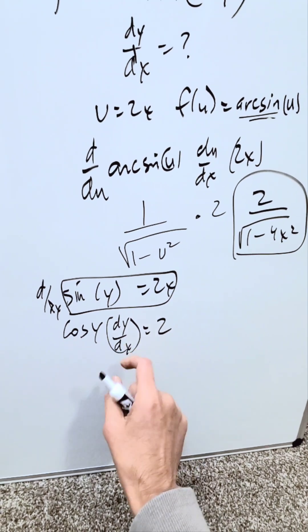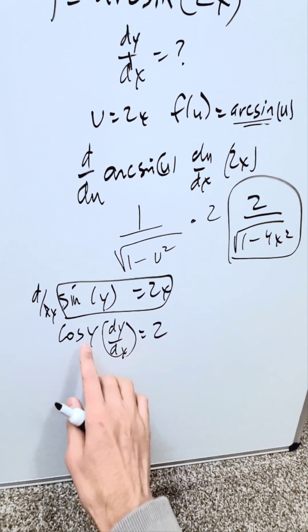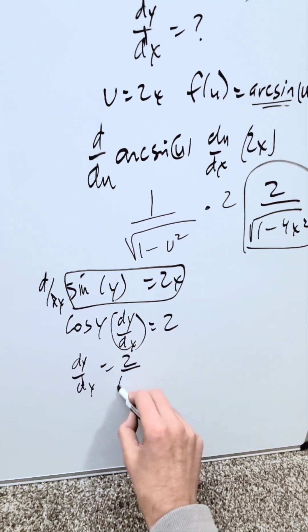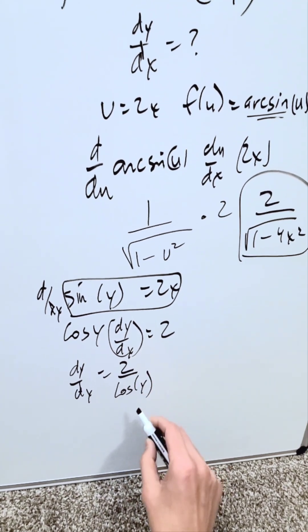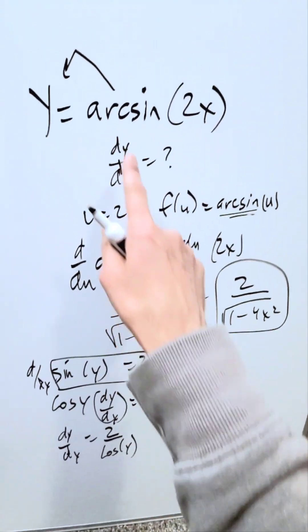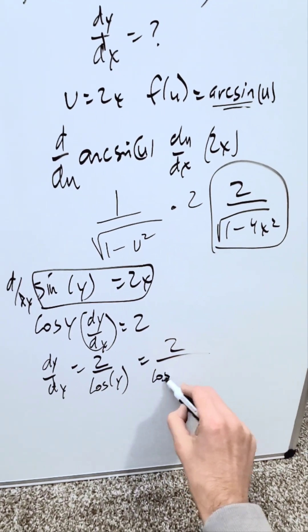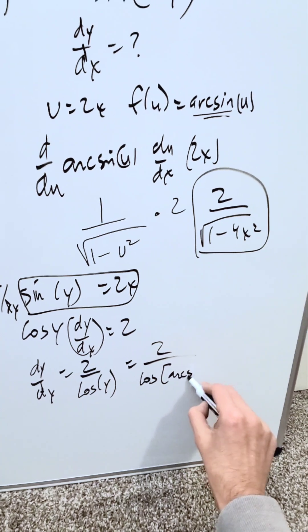Push the dy/dx. Keep the dy/dx here. Push the cosine y on the other side. dy/dx is equal to what? 2 divided by cosine of y. What was y equal to? Your original expression you see right over here. Bring it in. I have a 2 over cosine of what? Arc sine 2x.